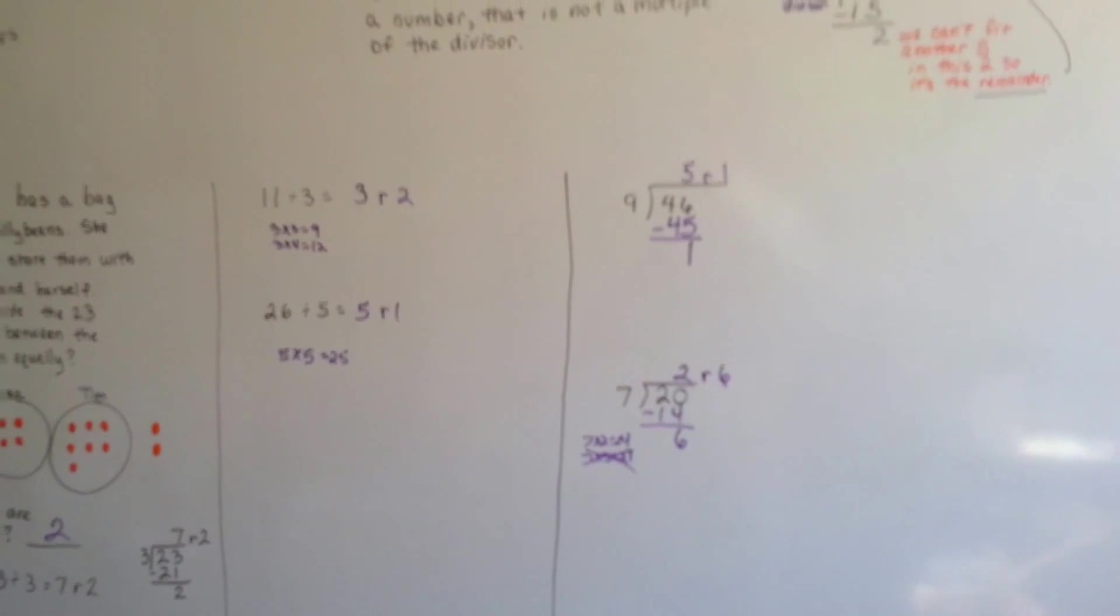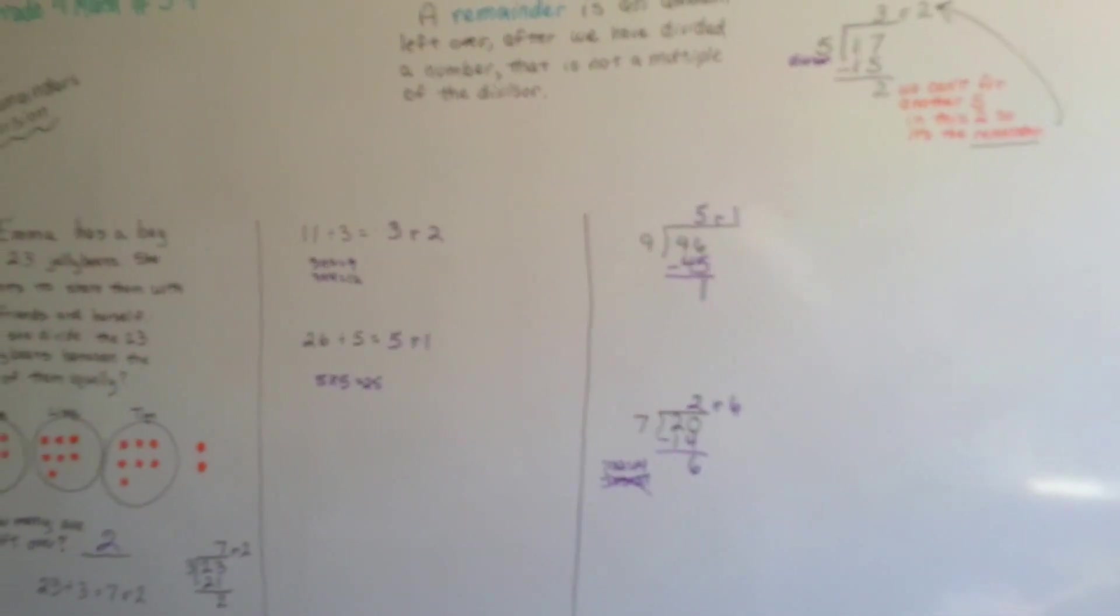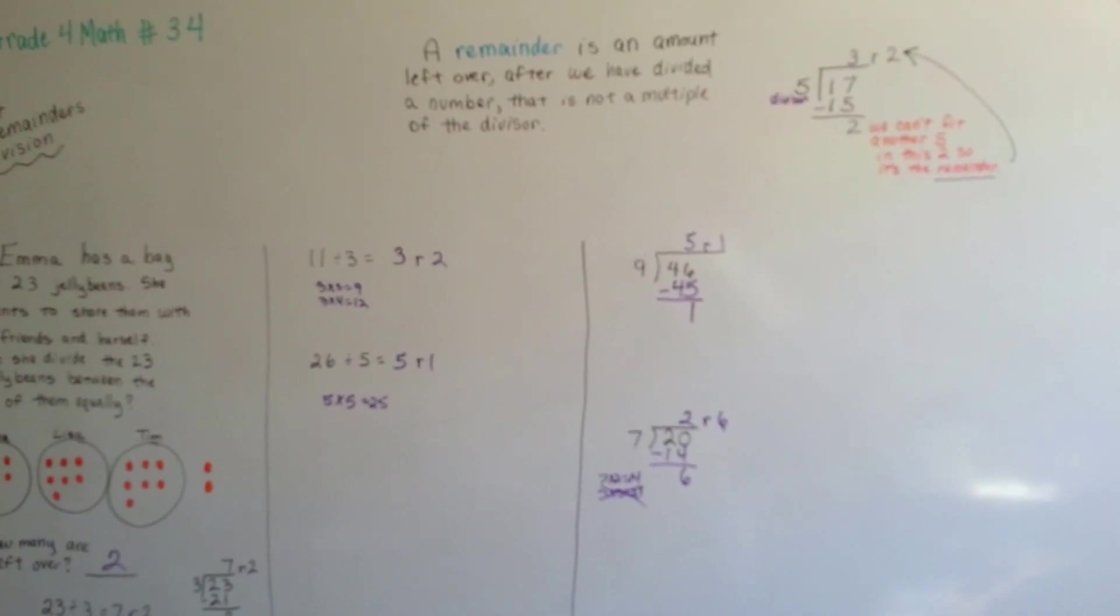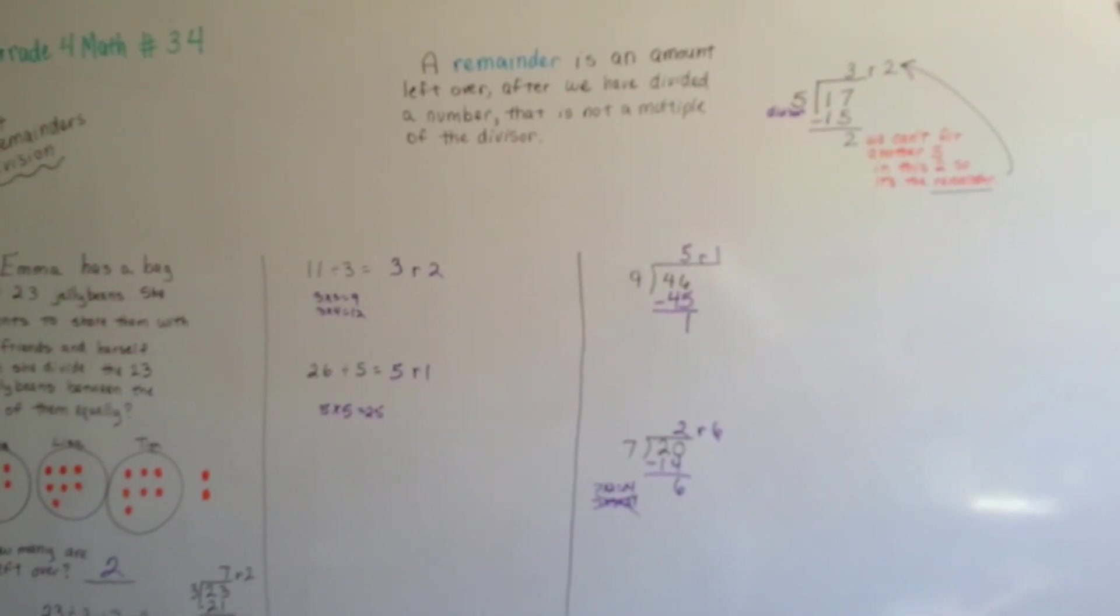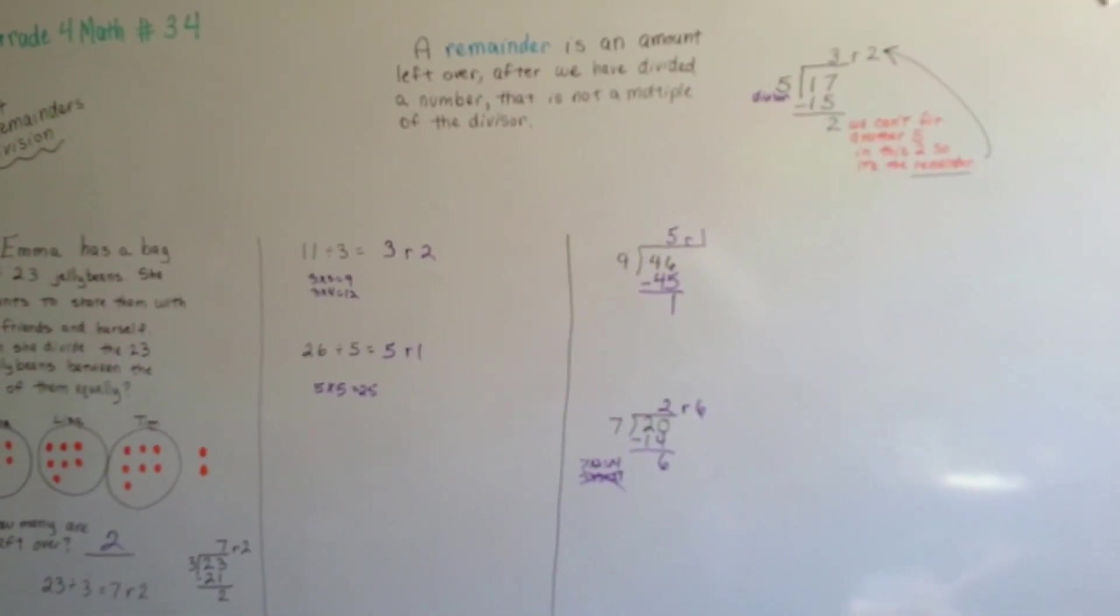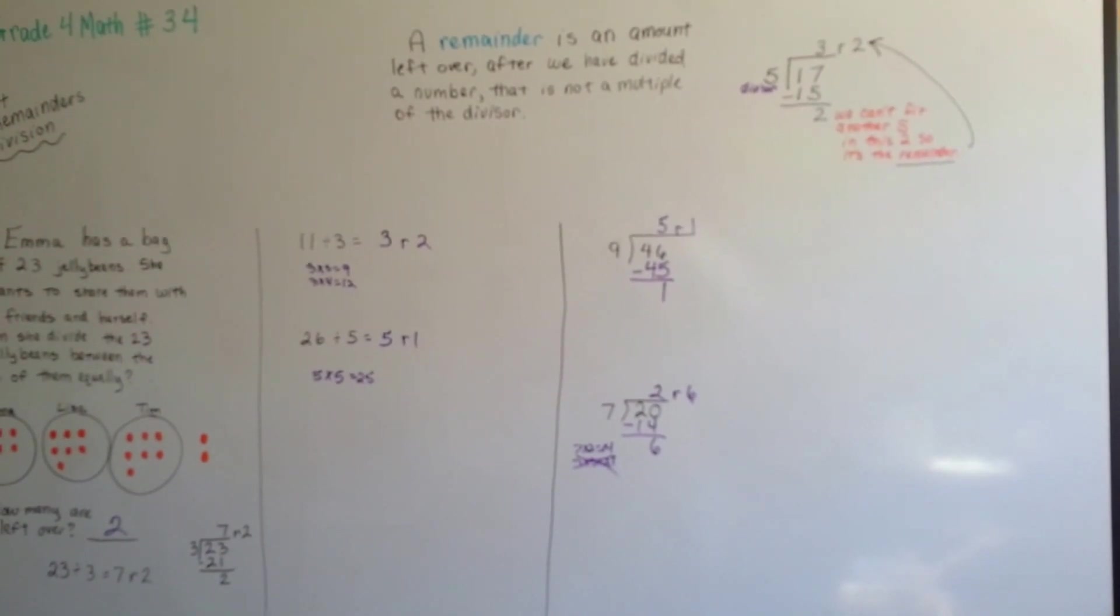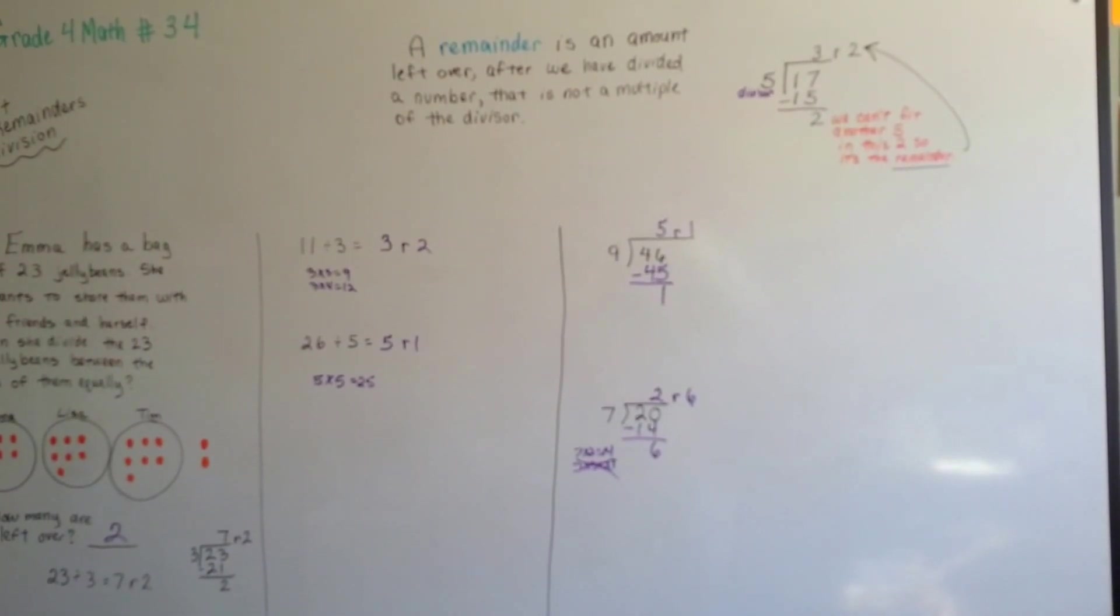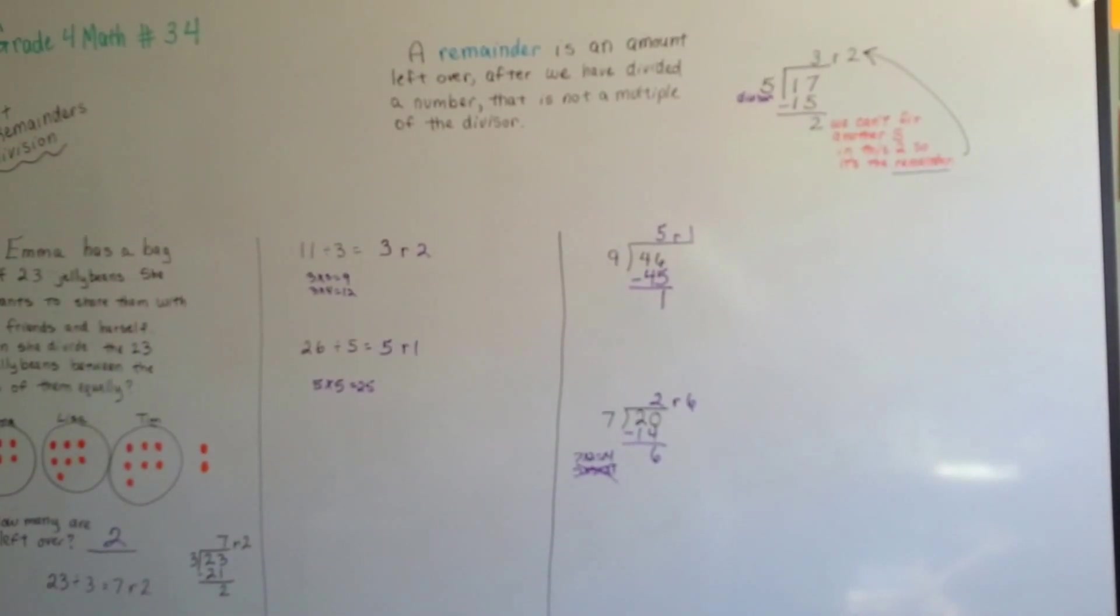They're leftovers. They won't fit as a multiple of the divisor. They're just not quite big enough. So they're leftover remainders. We're going to keep talking about division, and I'll see you next video. Bye.